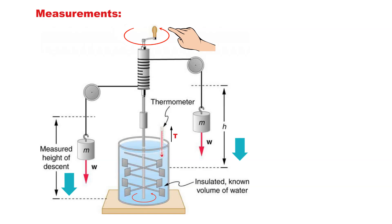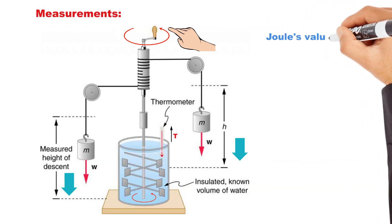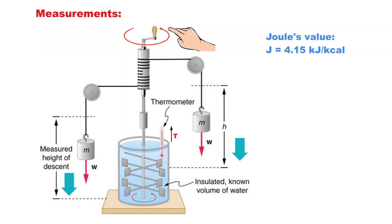Joule found that when the falling weight lost approximately 4.15 kilojoules of mechanical energy, the temperature of one kilogram of water increased by one degree Celsius. Later, more precise measurements determined the amount of mechanical energy needed to raise the temperature of one kilogram of water from 14.5 degrees Celsius to 15.5 degrees Celsius is 4.186 kilojoules per kilocalorie.